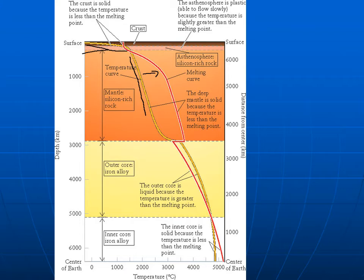The same thing happens with a pressure cooker — you put it under high pressure and can raise the temperature much higher to cook with, because the water doesn't boil away, allowing you to cook faster. As you get deep inside the Earth, just the weight of all the rock on top increases the pressure more and more. So the temperature required to melt the rock increases from the surface to the interior, meaning the actual temperature of the rock is much less than the melting temperature.